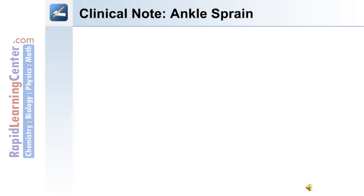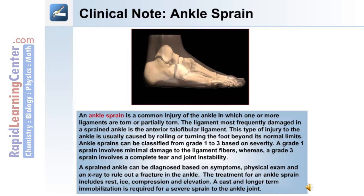A clinical note on ankle sprain: an ankle sprain is a common injury in which one or more ligaments are torn completely or partially. The ligament most frequently damaged is the anterior talofibular ligament. This injury is usually caused by rolling or turning the foot beyond its normal limits. Ankle sprains are classified from grade one to three based on severity. A grade one sprain involves minimal damage to the ligament fibers, whereas a grade three sprain involves a complete tear and joint instability. Diagnosis is based on symptoms, physical exam, and an x-ray to rule out fracture. Treatment includes rest, ice, compression, and elevation. A cast and longer-term immobilization is required for a severe sprain.